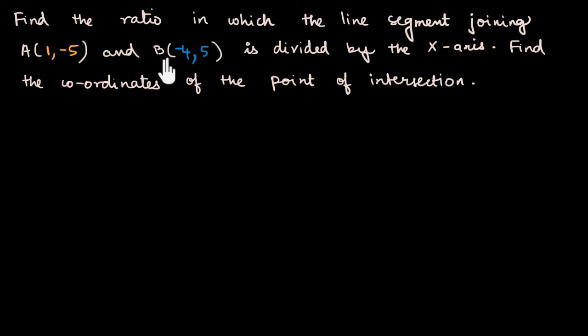That means you find where this x-axis cuts this line segment - that's a point. And then see how that point divides, in what ratio that point divides this line segment. That's what the question's asking us.